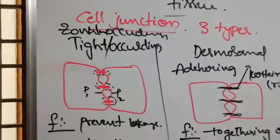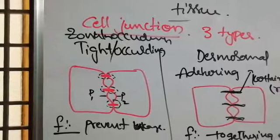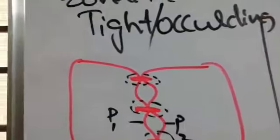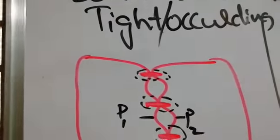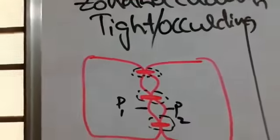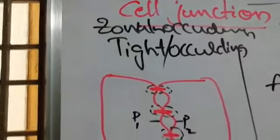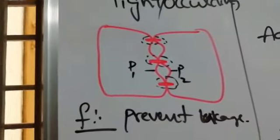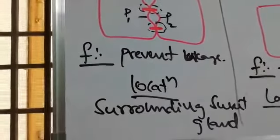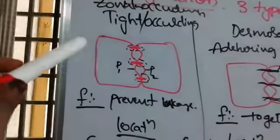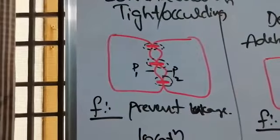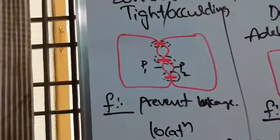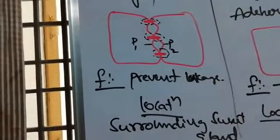The tight junction is also called the occluding junction, or zonula occludens. These tight junctions are formed by the combining of two cell plasma membranes together with a special protein, forming a junction. The main function of the tight junction is preventing leakage. It is located surrounding the sweat glands.